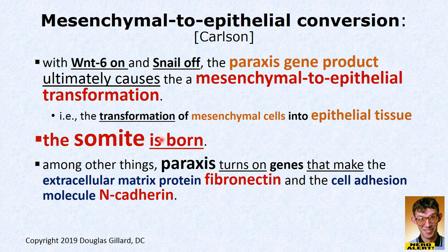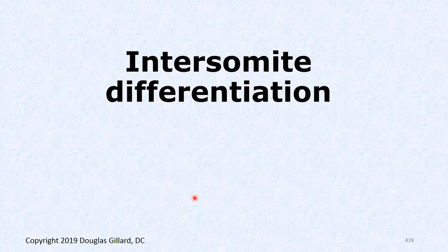The somite is now officially born. Paraxis is an important gene product — it also makes extracellular matrix proteins including fibronectin and cell adhesion molecules like N-cadherin.